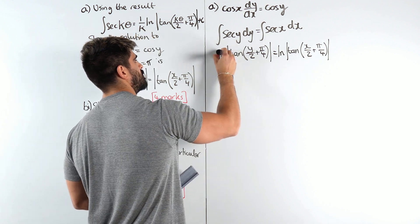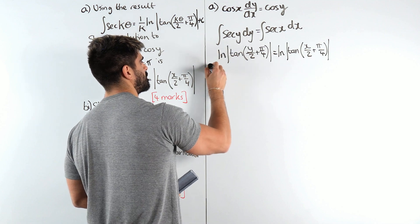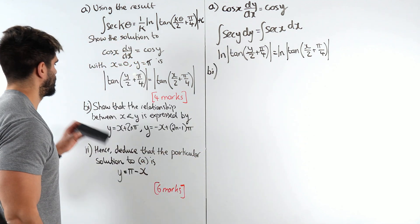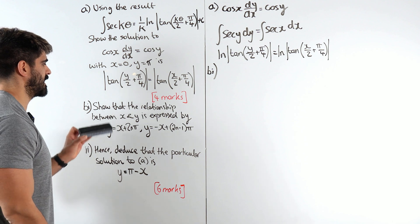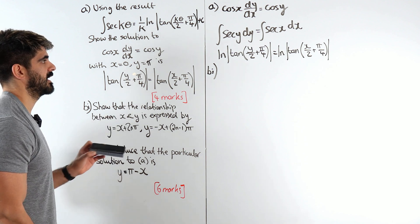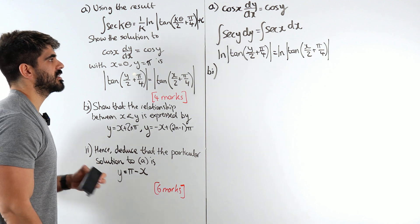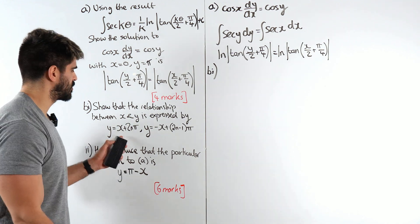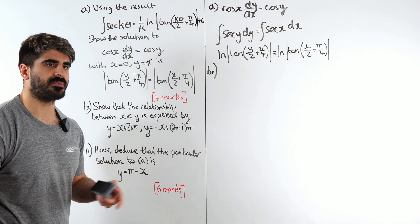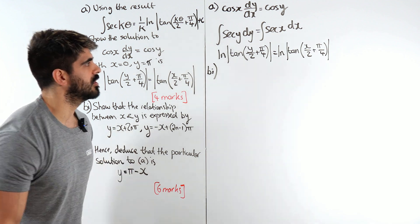Show that the relationship between x and y is expressed as this. Alright. That just means solve for x and y but there's two solutions for some reason. Let's check it out why that's the case.